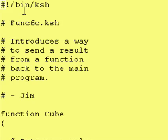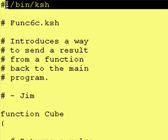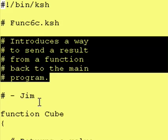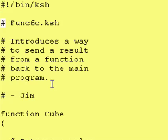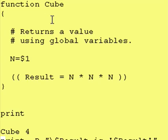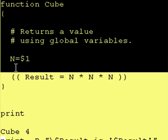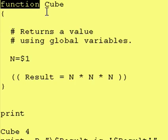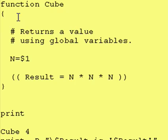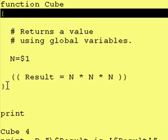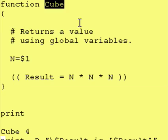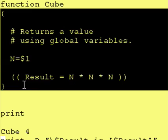Let's look over our program. We have our standard pound exclamation point slash bin slash ksh, our program name, a little bit about what the program does, who created it, and right here we have our definition of our function. Same thing as always — we start with the word function, the name of the function, and then the function is equivalent to anything between these two curly braces. So every time the word cube gets called, all these commands in here get executed.